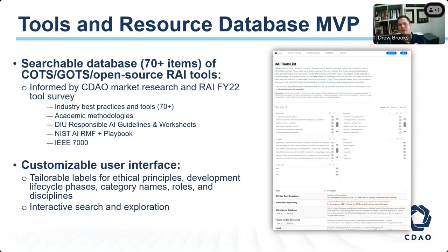While the initial release was just a static document, we next put it into a web app. On this web app you can interact with the database of tools, search it using various filters — understanding which ones are high-code versus low-code or just checklist-type things. You can align them to various other pieces of guidance like the AI RMF, or search by ethical principle. You can also sort the SHIELD assessment by your RAI role. We looked at all roles within the Defense Cyber Workforce Framework — particularly data and AI-focused roles — and identified who would be responsible, accountable, supporting, consulted, or informed at each step.